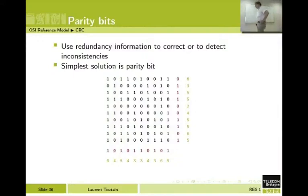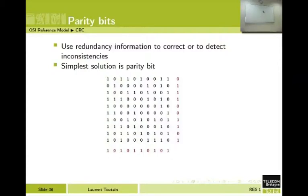Parity bits are fine. If I have an error — for example, here this information goes wrong — my signal has been modified and the receiver understood a 0 instead of a 1. So here you have two places, a row and a column, where it's wrong.